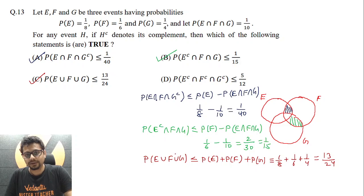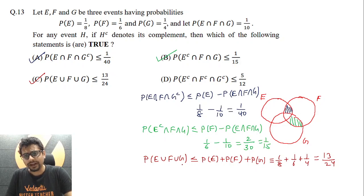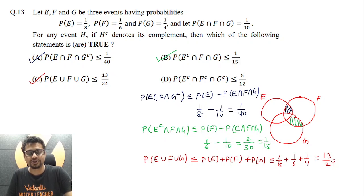This logic is easy to understand: probability of E union F union G will definitely be less than probability of E plus probability of F plus probability of G. Equality holds only if E, F, and G are disjoint — mutually exclusive events. Otherwise it will strictly be less. Since probability of E intersection F intersection G is not zero, they are not mutually exclusive, so the inequality is strict. We may still say less than or equal to.